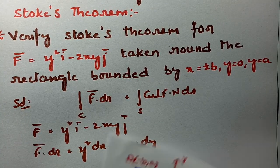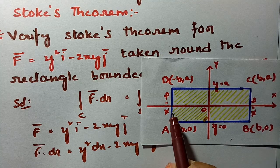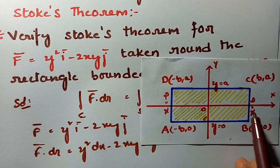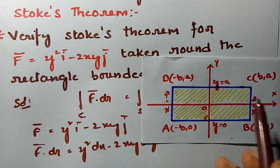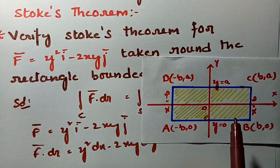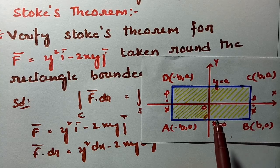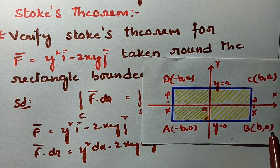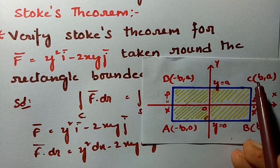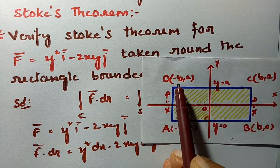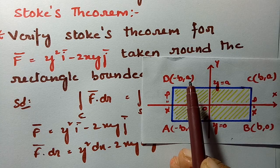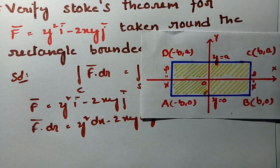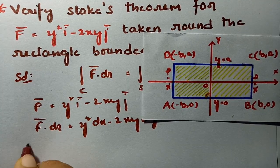The rectangle is bounded by x = -b, x = +b, y = 0, and y = a. The corner points are: A = (-b, 0), B = (b, 0), C = (b, a), and D = (-b, a). We will calculate the line integral along each side.